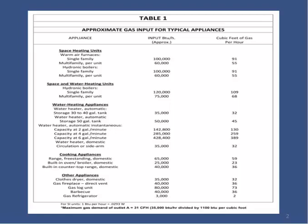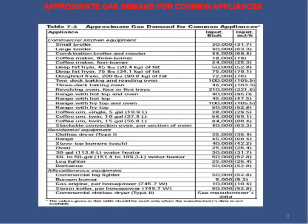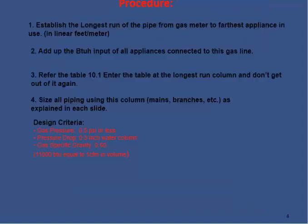Similarly, here we see a table giving the input required for domestic appliances. The procedure for designing the pipe sizes is as follows: Number 1, establish the longest run of the pipe from the gas meter to farthest appliance in use, in linear feet or linear meter. Then add up the BTU input of all appliances connected to this gas line.